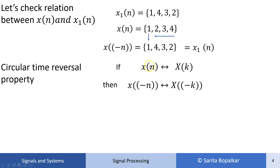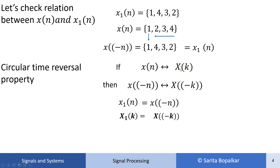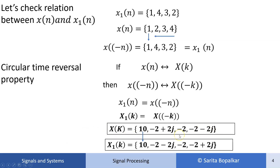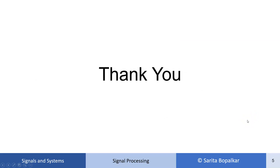By the circular time reversal property, if x[n] has DFT X[k], then its folded version has DFT that is also a folded version of X[k]. Since x1[n] is the folded version of x[n], X1[k] is the folded version of X[k]. Folding X[k] = {10, -2+2j, -2, -2-2j}: keep the first sample 10, and reverse the rest to get X1[k] = {10, -2-2j, -2, -2+2j}. This is the example where we used the circular time reversal or time folding property of DFT. Thank you.